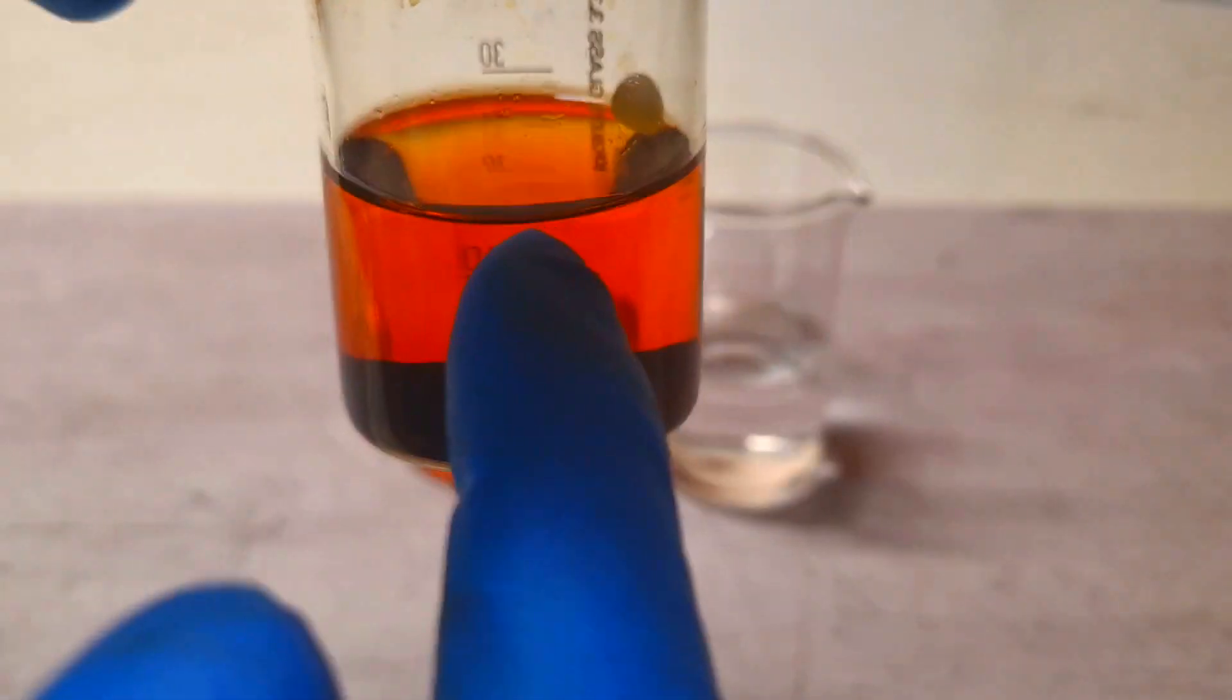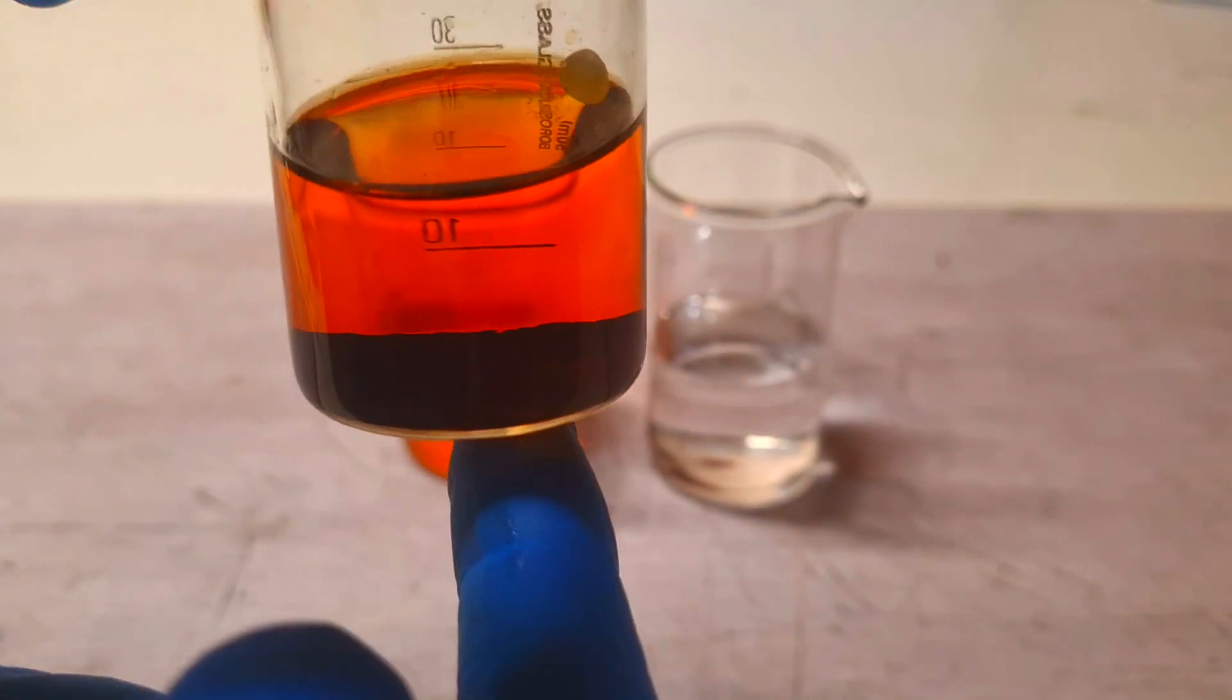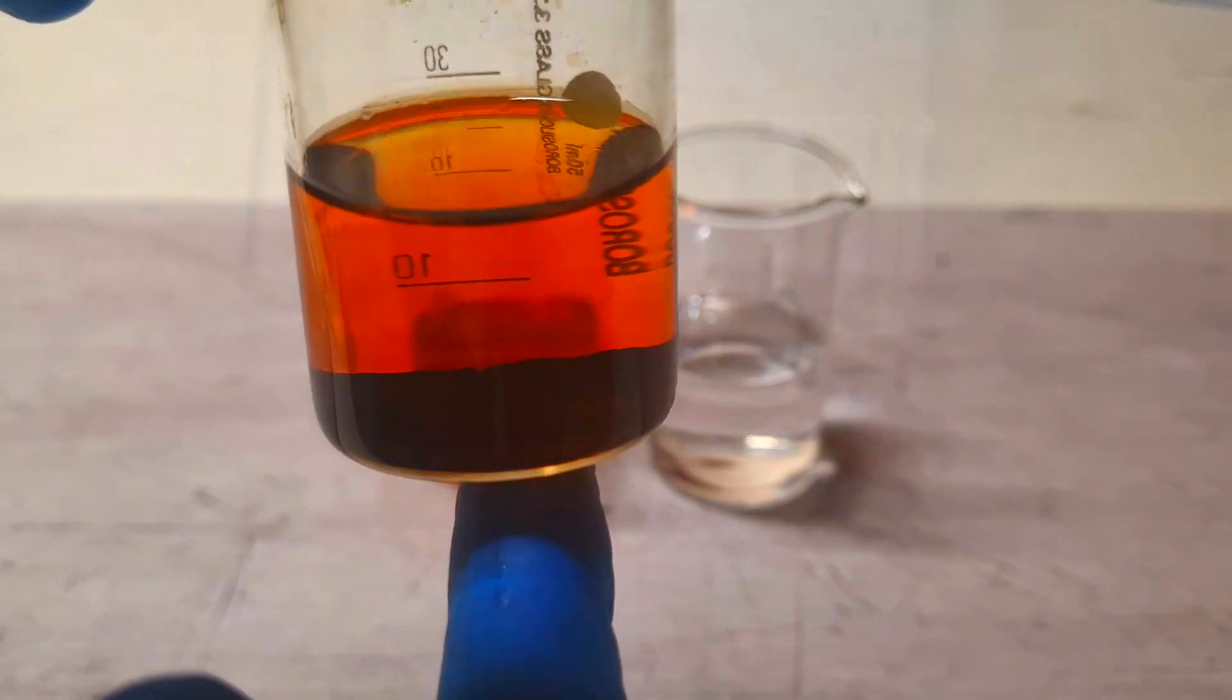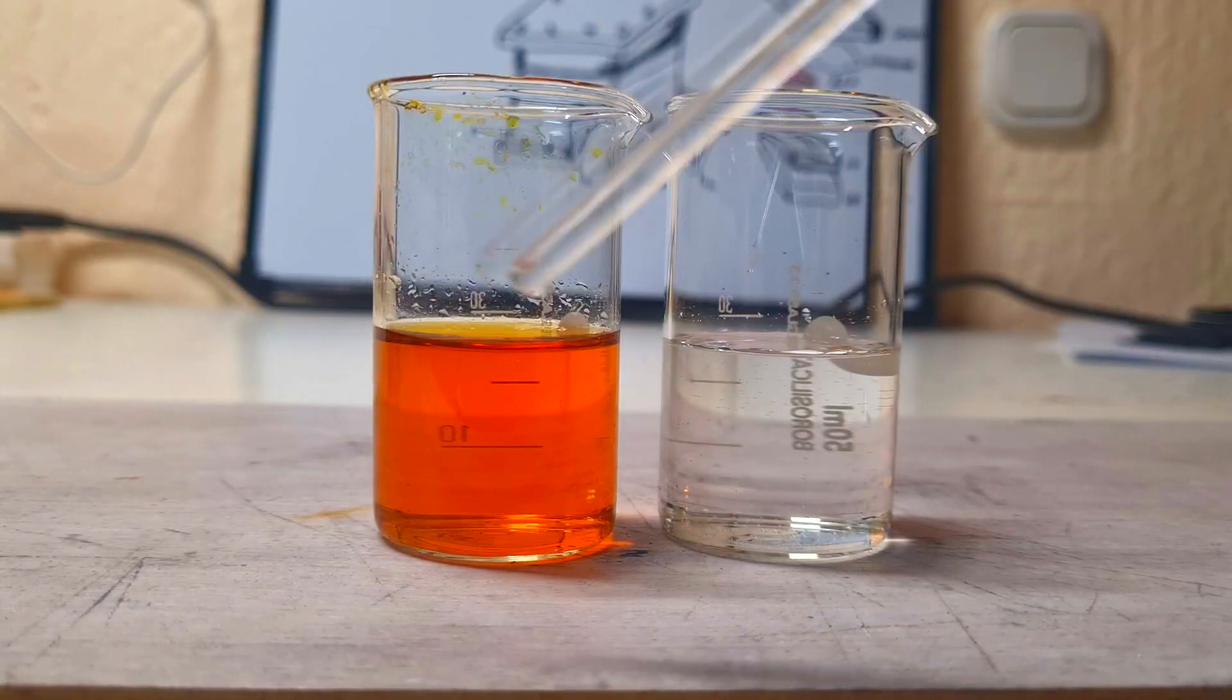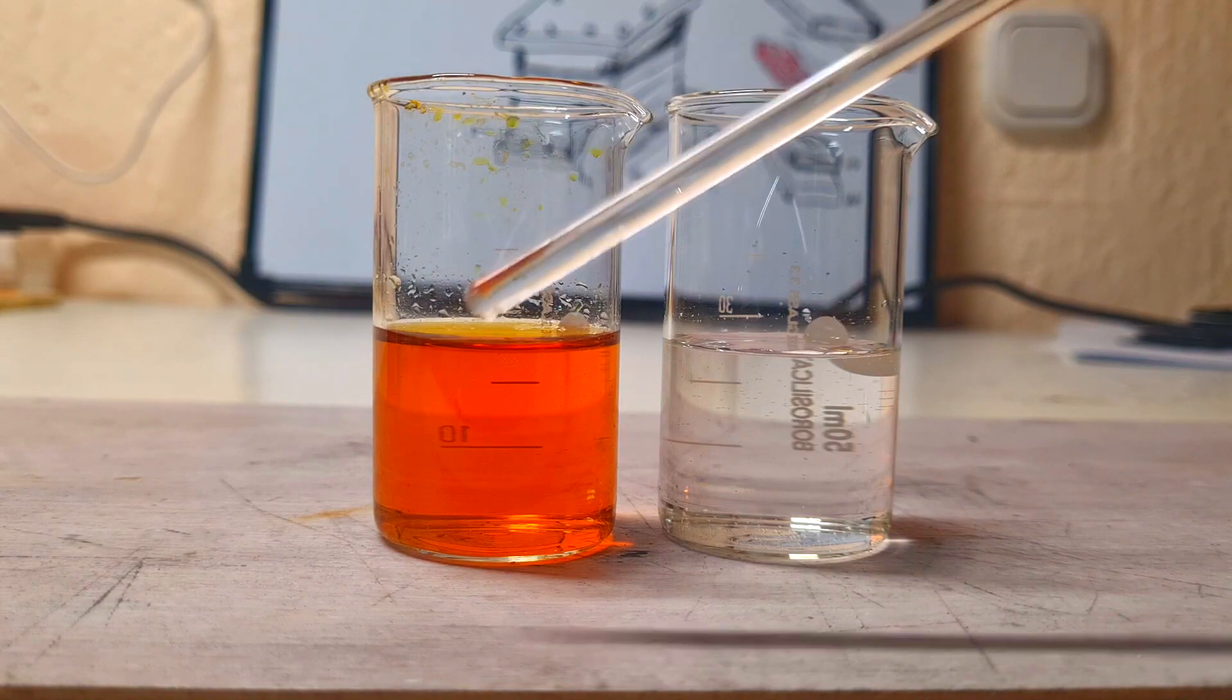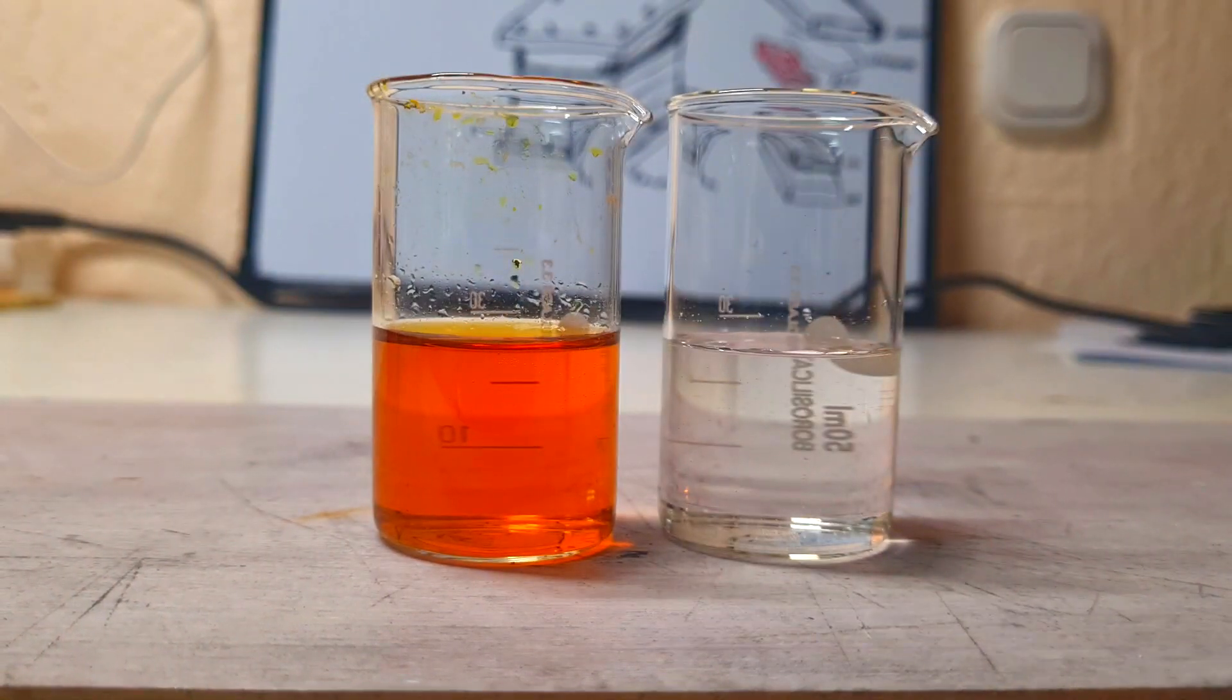Here on the top I can place some zinc. In this case I will get some zinc iodine gravity battery. But before I will mix these two solutions together, I will fill the bottom of this beaker with some carbon foam.